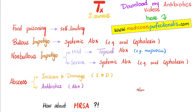For a skin abscess, management depends on severity. Routine treatment is incision and drainage. If it's severe, add antibiotics. If the infection reaches the blood causing bacteremia, give intravenous antibiotics. Management of an abscess depends on the clinical scenario.